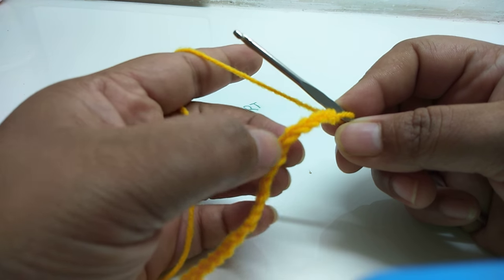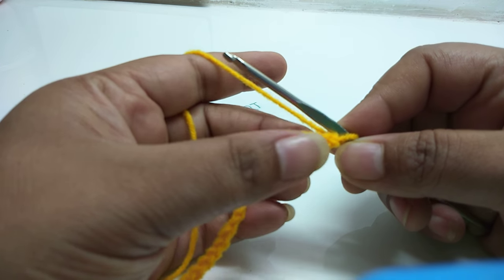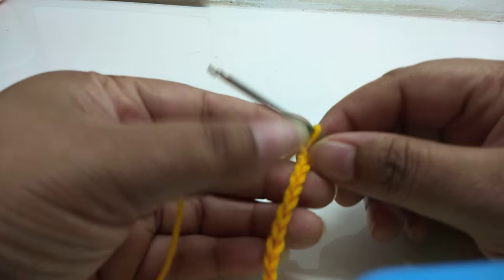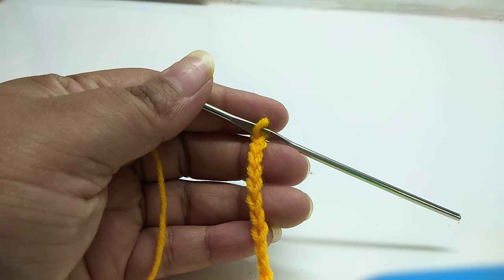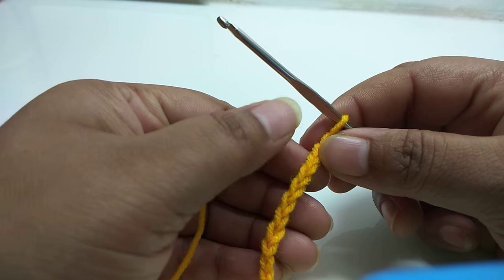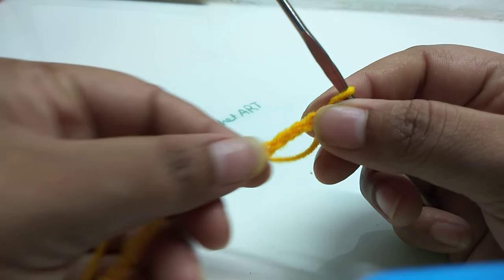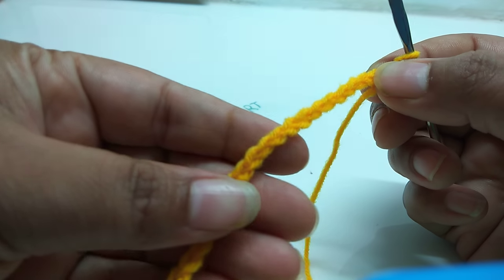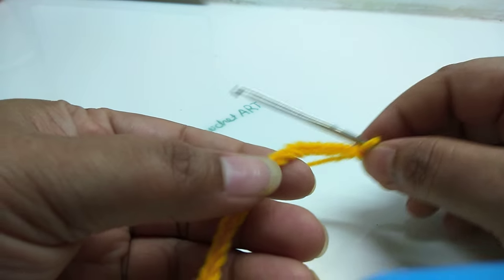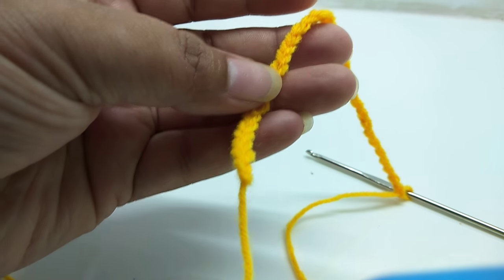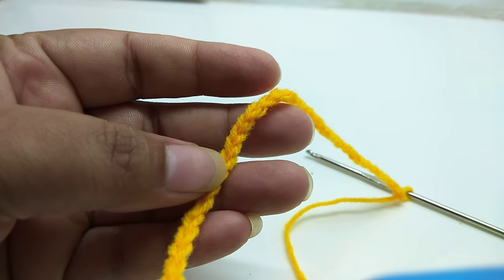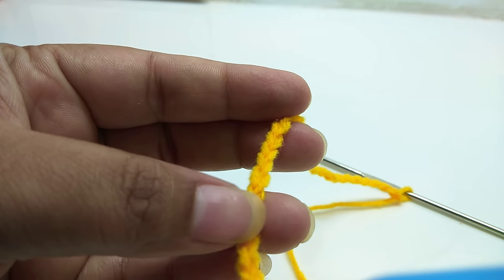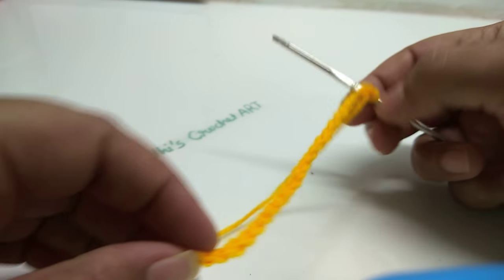Before we try slip stitch, we will work with chain stitch. So today we are going to learn how to do slip stitch. Before doing slip stitch, first you need to work this chain stitch, simple chain stitch. If you want to learn how to work this simple chain stitch, then visit class 1, crochet class 1 for beginners from my YouTube channel Needy's Crochet Art.